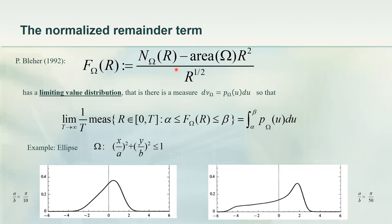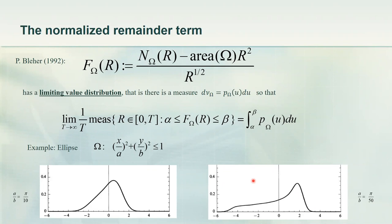Once you know this, you again look at the remainder term, normalize it, and think of the dilating parameter as a random variable. Pavel Blecher proved, almost 30 years ago, that there is always a limiting distribution with pretty much the same features as the circle's limiting distribution. But that distribution is not universal — it depends on the shape. Here are two examples: both are ellipses, but the limiting distribution for eccentricity π/10 and for eccentricity π/50 are just two different distributions.